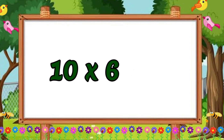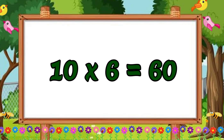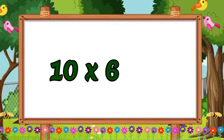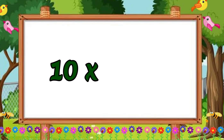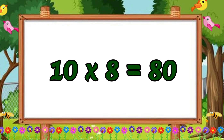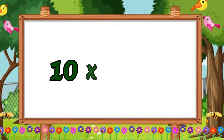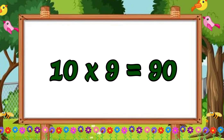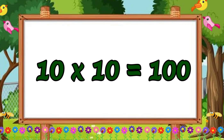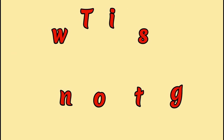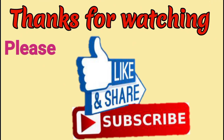Ten sixes are sixty. Ten sixes are sixty. Ten sevens are seventy. Ten sevens are seventy. Ten eights are eighty. Ten eights are eighty. Ten nines are ninety. Ten nines are ninety. Ten tens are seventy. Ten tens are seventy. Please subscribe to this channel.